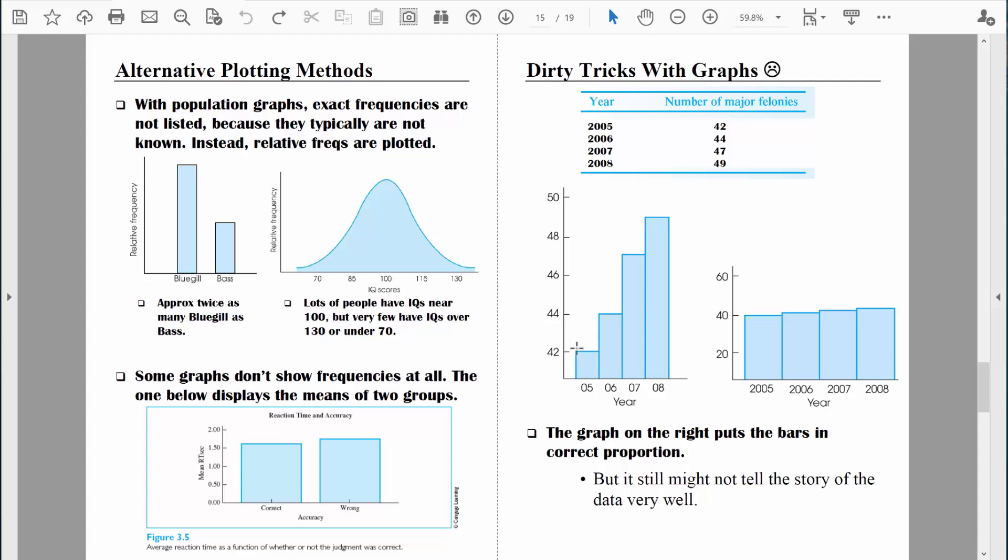Let me show you what I'm talking about. In 2005, there were 42 major felonies. In 2006, there were 44. This bar looks twice as tall as this bar, but 44 is not twice as large as 42. The bars are not in proportion. In this graph, the bars are in proportion because in this graph, there's a zero point. In other words, the entire scale is actually being shown. In this graph, there is no true zero point. It's essentially just the tops of the bars being shown.